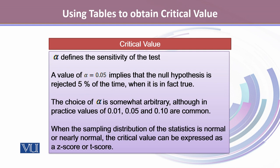When the sampling distribution of the statistics is normal or nearly normal, the critical value can be expressed as a z-score or a t-score.